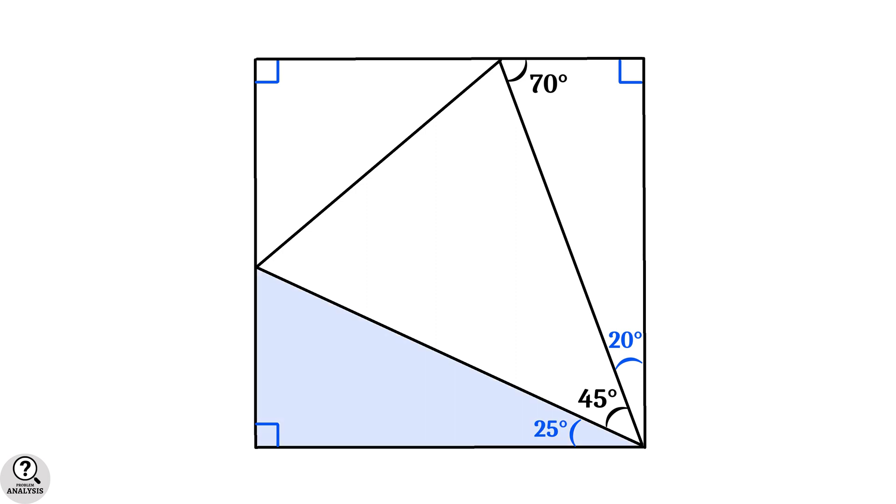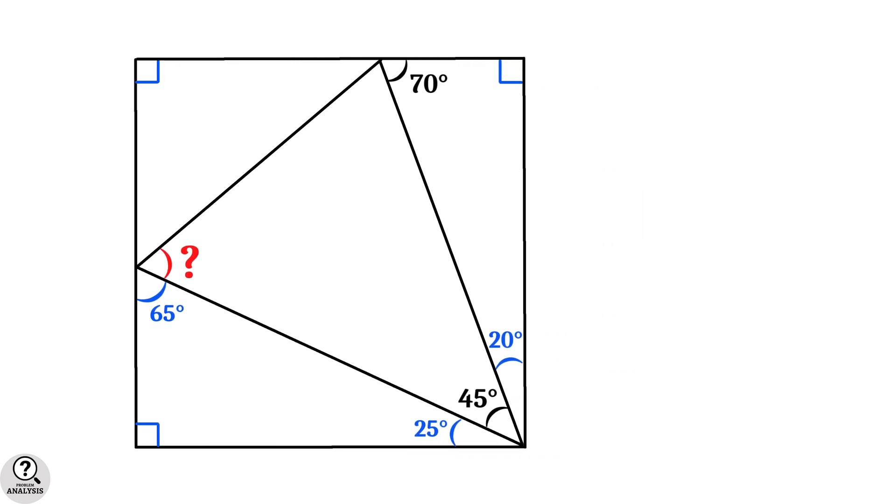Now consider this right triangle. The remaining angle will be 90 minus 25 equals 65 degrees. That's all. No more angles are obvious. But still, we have to find this angle. So there should be some trick. That is what I am going to do next.